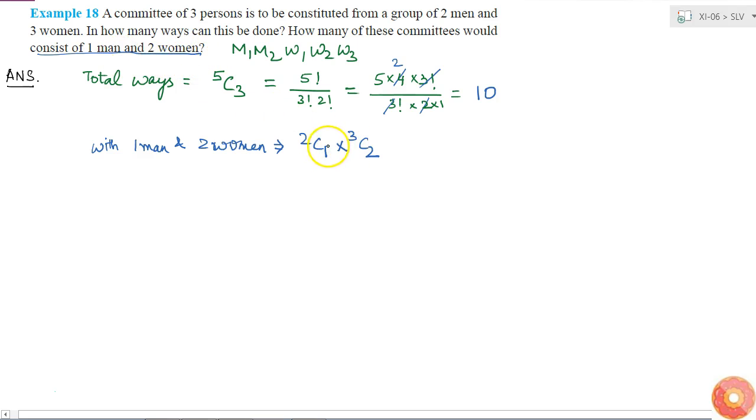So what will be this value? 2C1 is 2 factorial by 1 factorial into 1 factorial, and 3C2 is 3 factorial by 2 factorial into 1 factorial. This is 2 and this is 3. So therefore there are total 6 ways in which the committee has 1 man and 2 women.